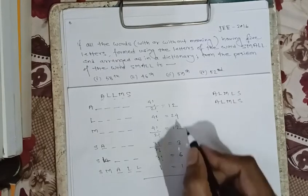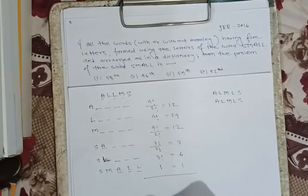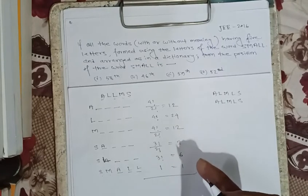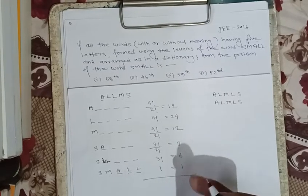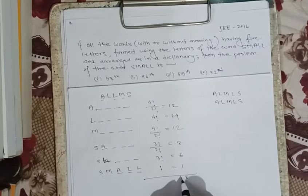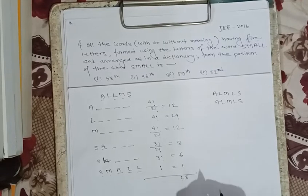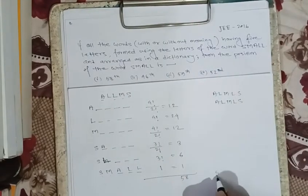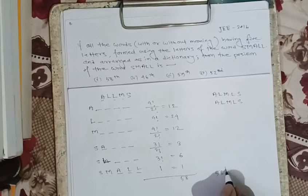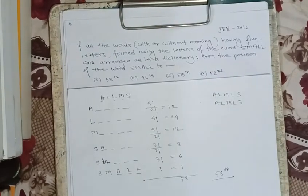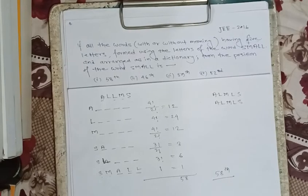So we add all the counts: 12 (starting with A) + 24 (starting with L) + 12 (starting with M) + 3 (starting with SA) + 6 (starting with SL) + 1 (SMALL itself) = 58. Therefore, the position of the word SMALL in the dictionary is 58. Thank you friends.